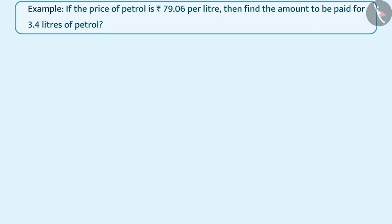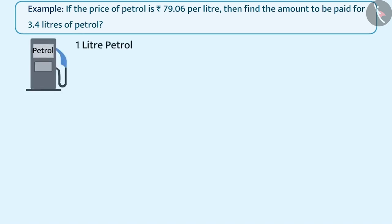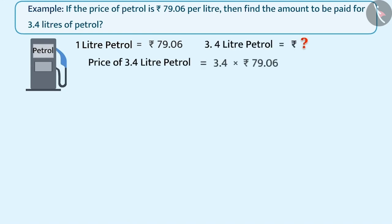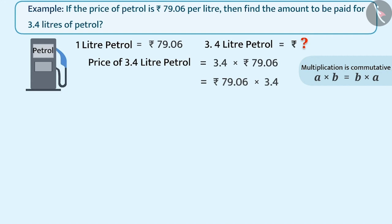Example 2: If the price of petrol is Rs. 79.06 per litre, then find the amount to be paid for 3.4 litres of petrol. Since the price of petrol is Rs. 79.06 per litre and we need to find the cost of 3.4 litres, we have to multiply Rs. 79.06 with 3.4. Since multiplication is commutative, that means it can be performed in any order, we can write this multiplication as Rs. 79.06 multiplied by 3.4, as this will simplify the process.